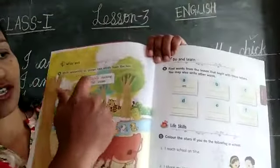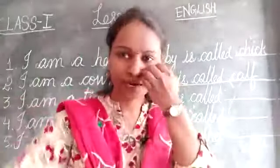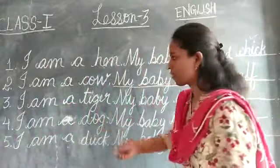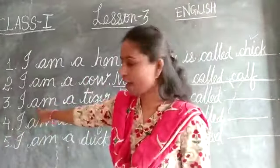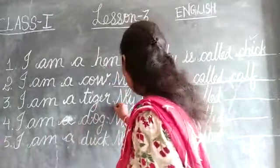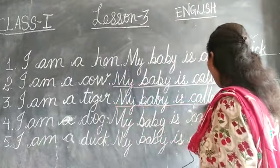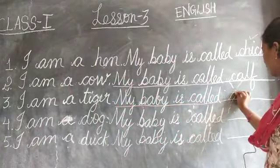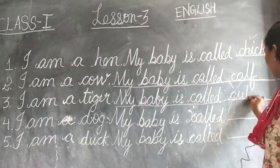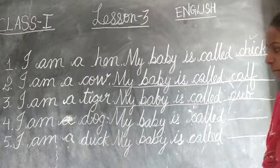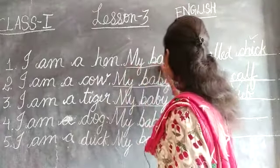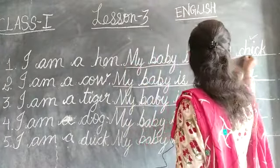See here, children — cow, you have to tick. Duckling, cub, and puppy you will tick later. First you have to write. Next one: I am a tiger — see in the textbook. My baby is called — cub, C-U-B — then you have to keep a full stop. Here they have already written, children; you need not write.